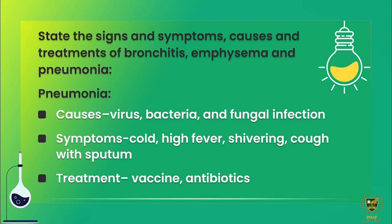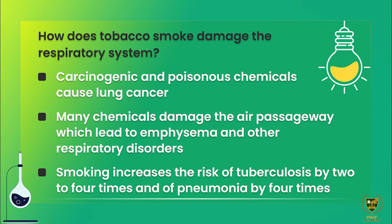Pneumonia is infection of the lungs. Causes: virus, bacteria, fungal infections. Symptoms: cold followed by high fever, shivering, cough with sputum. Treatment: vaccines are available; if caused by bacteria, antibiotics are given. Finally, how does tobacco smoke damage the respiratory system? Cigarette smoke contains carcinogenic and poisonous chemicals which cause lung cancer. Many chemicals damage the air passages leading to emphysema, bronchitis, tuberculosis. Smoking increases the risk of tuberculosis by two to four times and pneumonia by four times, and also increases cardiovascular risk.